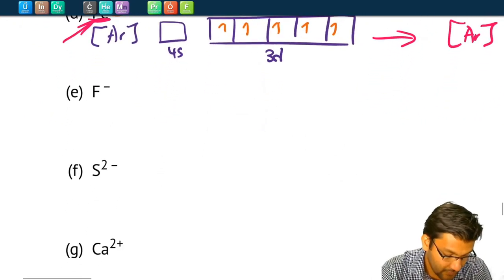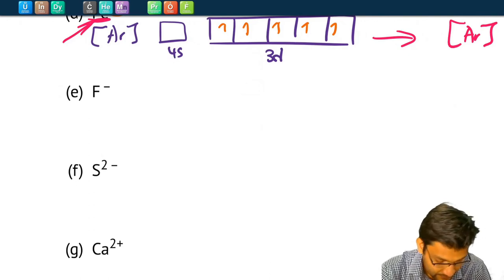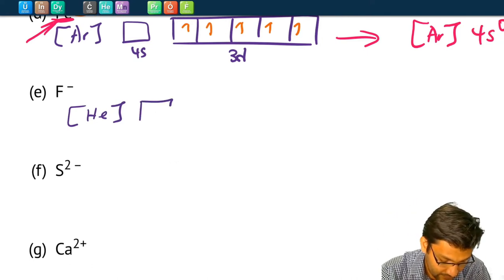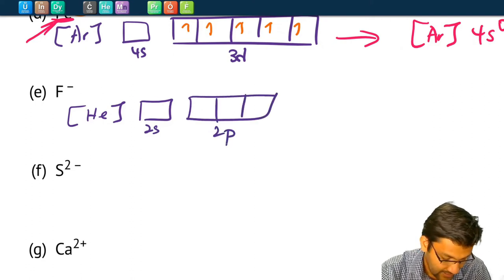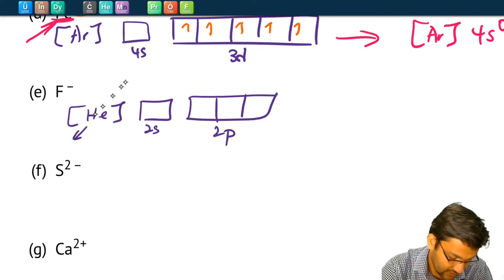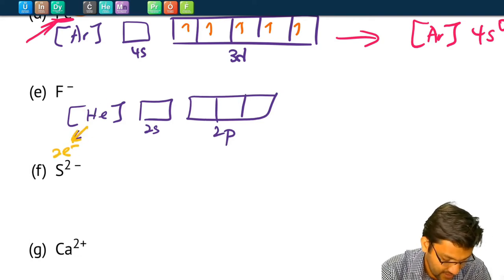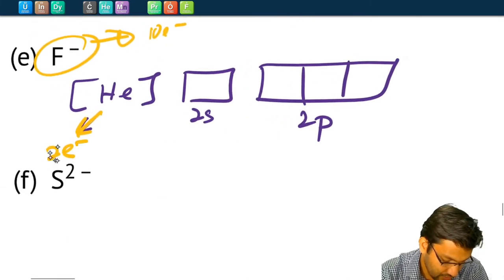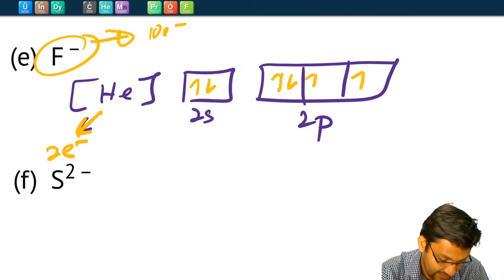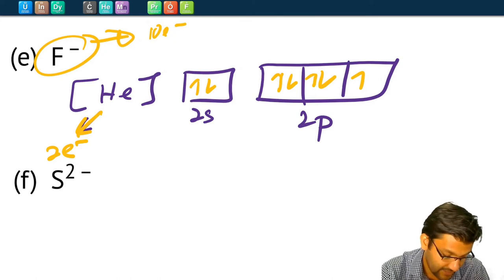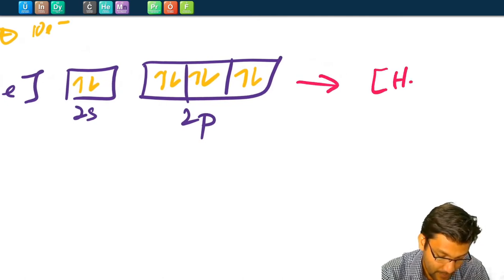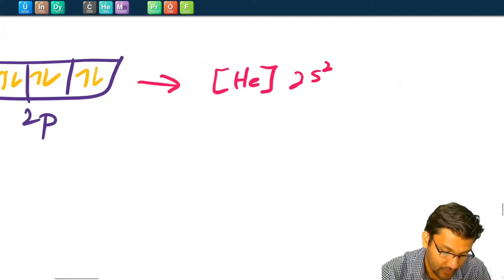For fluoride minus (F⁻), helium is the noble gas just below fluorine. Starting from [He], we draw boxes for 2s and 2p. Fluorine has 9 electrons, and the fluoride ion has 10 electrons. We build fluorine first: 2 electrons already in [He], so we add electrons 3 through 9. Then to get F⁻, we add one more electron — number 10. The electron configuration is [He] 2s² 2p⁶.